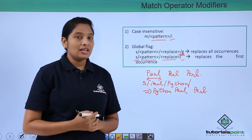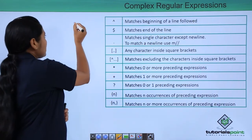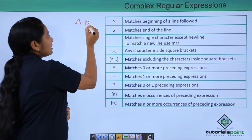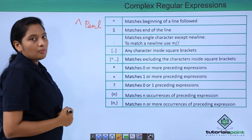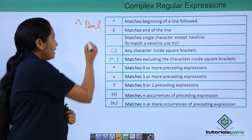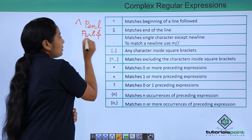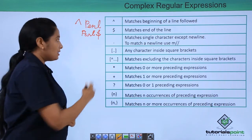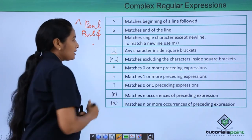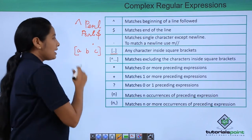Now let us see some wildcard characters in complex regular expressions. If you want to match the beginning of a line, then you can use the caret symbol followed by the string — for example, if I want to match a string starting with pearl, use caret followed by pearl. If you want to match the end of a line, use pearl followed by a dollar symbol. To match any single character, just use a dot. If you want to match any specific characters, use a character set — for example, [A, B, C] means A or B or C.